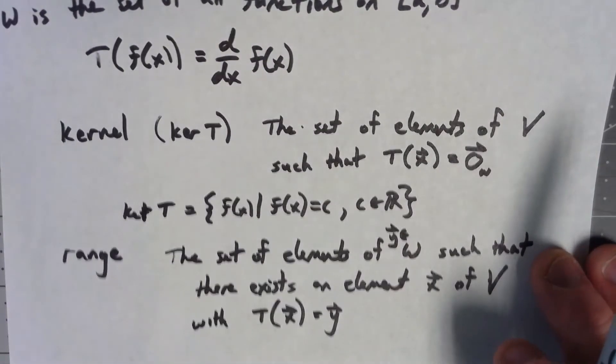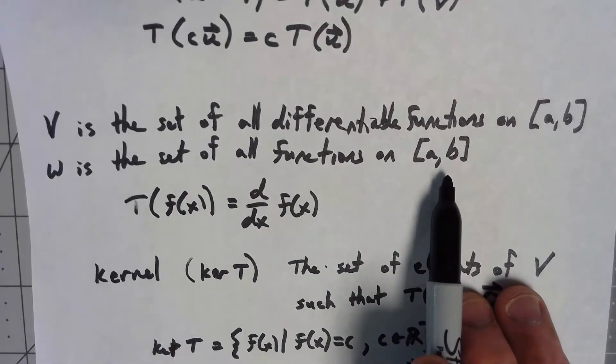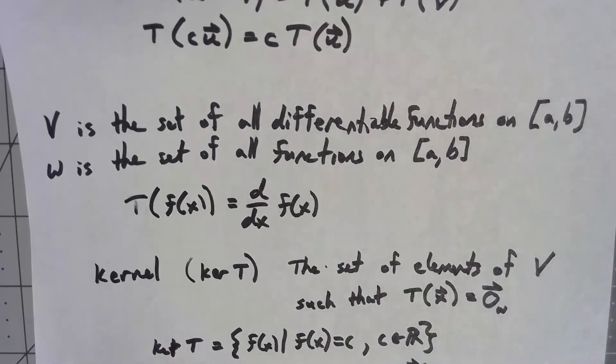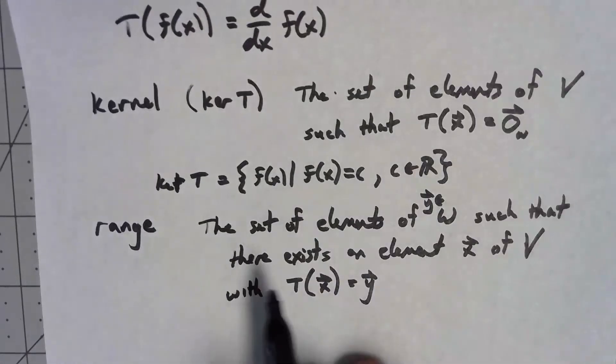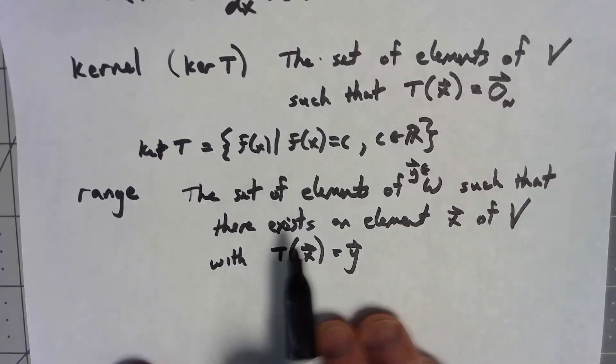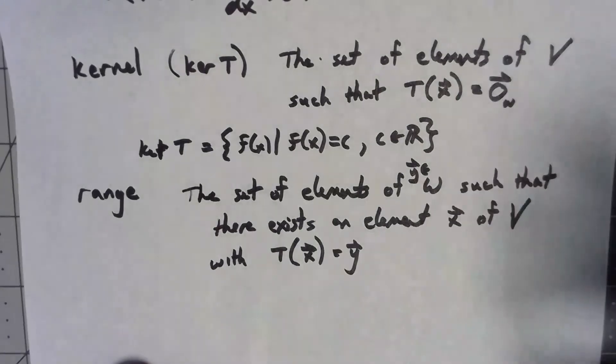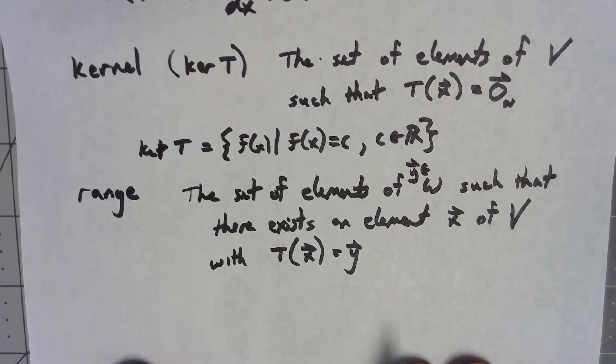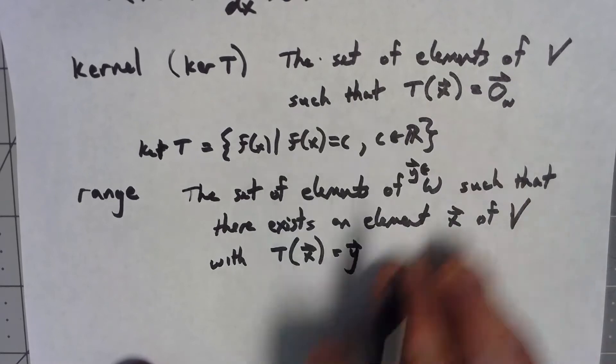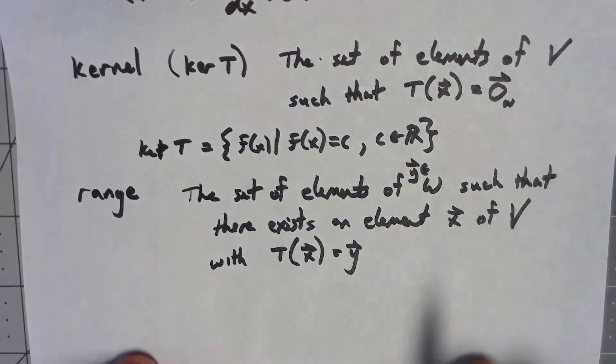So for example, here, since W is the set of all functions on a to b, not every function is the derivative of a differentiable function. There's functions that are not continuous and things like that such that they wouldn't be the derivative of a function. So here, we've got the set of elements that are actually hit. These are the set of functions that actually come out of the linear transformation. There isn't a good characterization in this particular example. It's just the set of functions that are derivatives of other functions.